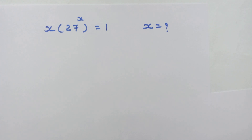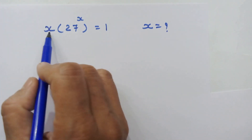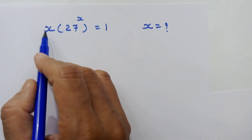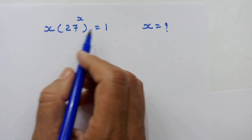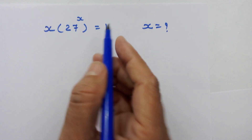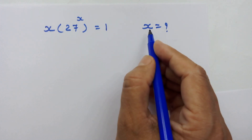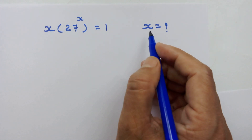Hello friends! Our question is x into 27 raised to x is equal to 1, and we have to find the value of x.